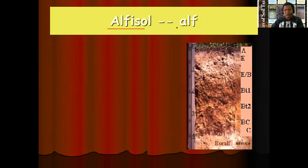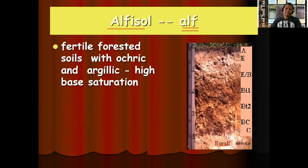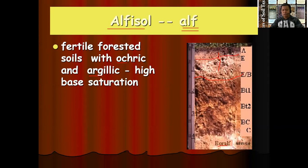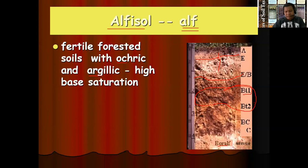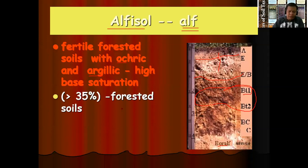We have the soil order alfisol with the formative element ALF. For example, 'buralfs' contains the formative element ALF. Alfisols are fertile forested soils with an ocric epipedon and argillic horizon. The A horizon is lighter in color compared to a mollic horizon — that is an ocric epipedon. With the argillic horizon, we have the BT layer showing accumulation of clay. Alfisols have a high base saturation, abundant calcium and other basic cations in the subsurface horizon, and are considered about 35% of forested areas.